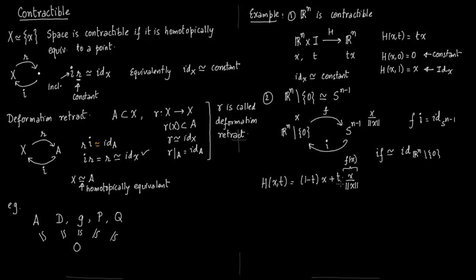The inclusion map doesn't help much because it's just inclusion. If we just construct F of X, you can clearly see when t is 1 you just get F of X, and when t is 0 you get X which is the identity map.